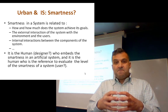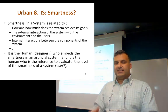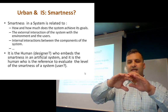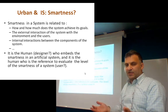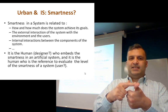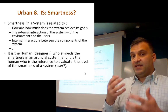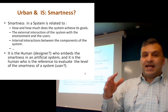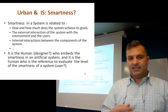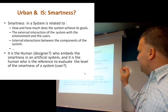Where does smartness reside? Smartness is related to the goals of a system. We should specify the goals of our system and define the relationships between the components of this system, as well as the relationship between this system and the outer environment. There are many things related to smartness regarding a system: the goals of the system, the interaction between the components in order to achieve those goals, and the interaction with the outer environment.